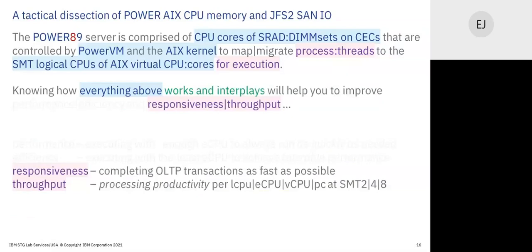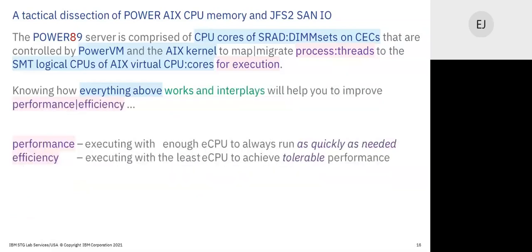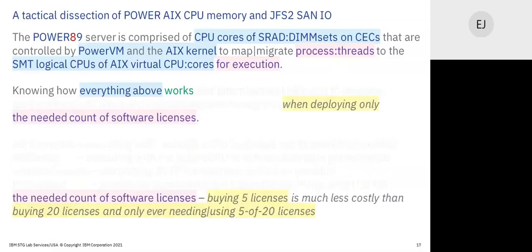Knowing how everything works will help you improve performance efficiency and responsiveness-to-throughput when deploying only the needed count of software CPU licenses. A lot of customers buy 20 licenses and find they're only using five — they paid for 15 extra software CPU licenses they didn't need. If you only need five, why are you buying 20?